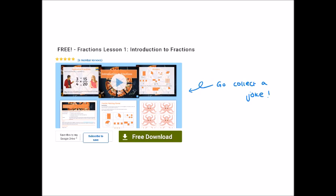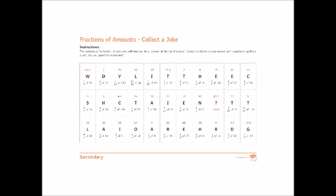Now we have that technique, go to the fractions lesson one introduction to fractions and look at the collector joke. If you've never seen one before, let's work through the first couple of questions together. We start at the word 'start', so our first letter is W. The question asks us to find a third of 15 — 15 divided by 3 is 5 — so we find the tile with the number 5, which gives the letter H. Then we find a fifth of 30 — 30 divided by 5 is 6 — find the tile with 6, giving the letter A. You can now pause the video, continue in this manner, and when you come back we'll find the punchline.